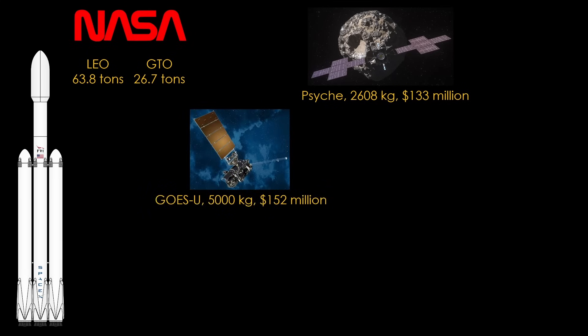The 5,000-kilogram GOES-U weather satellite will fly to geostationary orbit in 2024 at a launch cost of $152 million.